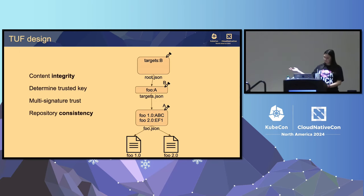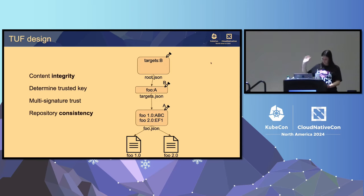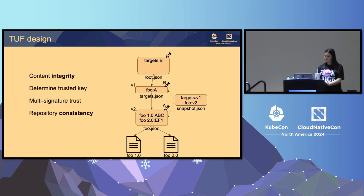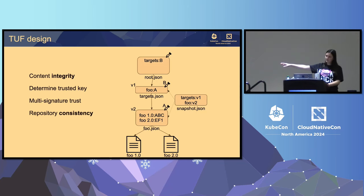The next thing we need is repository consistency. As foo 2.0 is released, shipping both 1.0 and 2.0, foo.json changed — so how do you know you have the right version? We introduce what's called a snapshot that lists the version numbers of different metadata files. Targets is still on v1, the updated foo.json is on v2, and the snapshot captures those versions. Because the hash of foo was included in foo.json, this also gives us the current versions of all the artifacts.